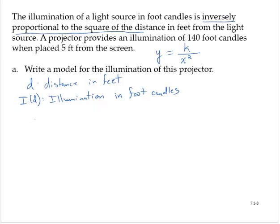So since the illumination is inversely proportional to the square of the distance, then I can write that I(d) is equal to k over d squared.